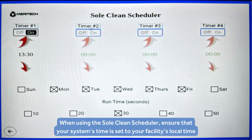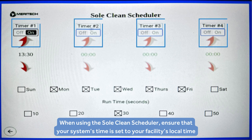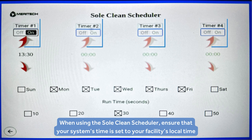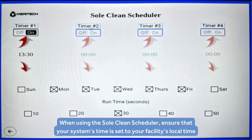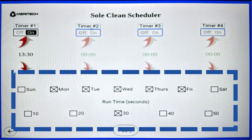Here you have four timers which you can toggle on or off, and you can set a specific time for a SoulClean reprime to take place. Along with these four timers, you can choose which days of the week the SoulClean scheduler will reprime the system.